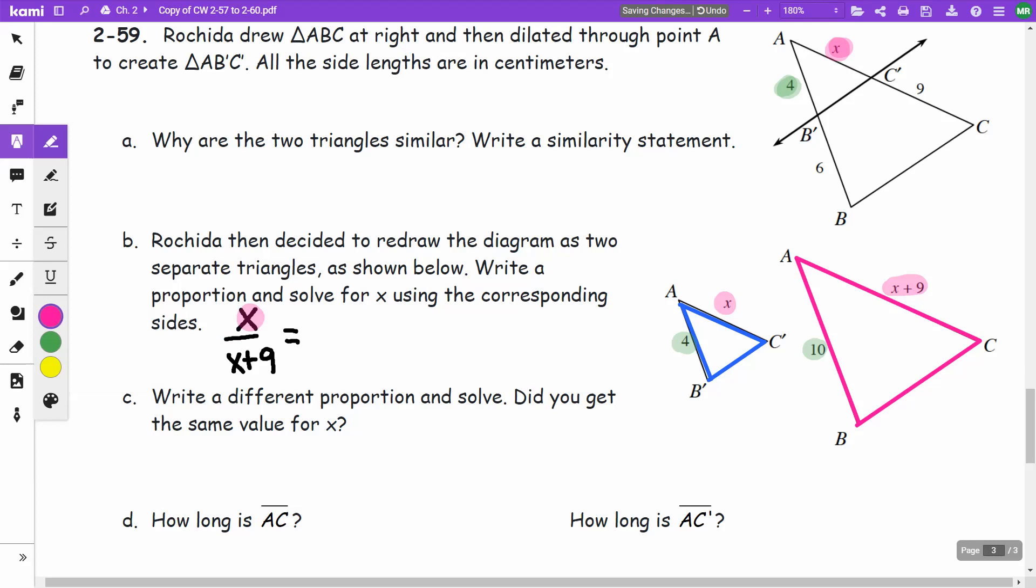I did my blue triangle over my pink triangle. So on the other side, I need to do blue triangle over pink triangle. That means I am going to do blue triangle 4 over pink triangle 10.